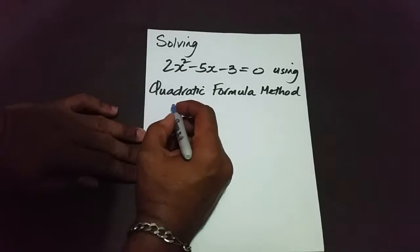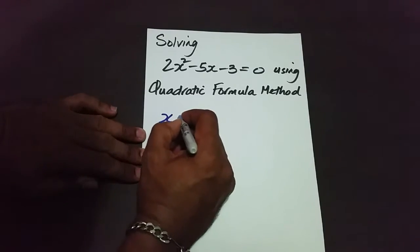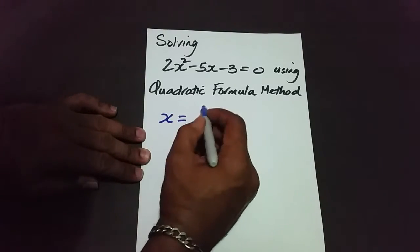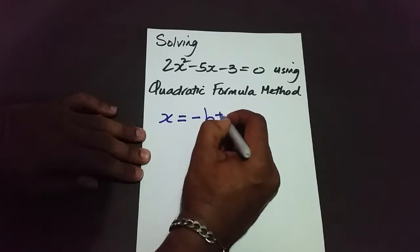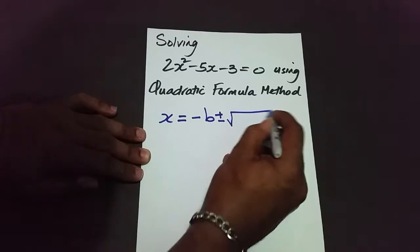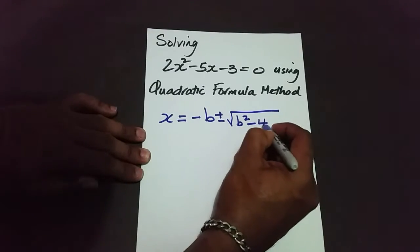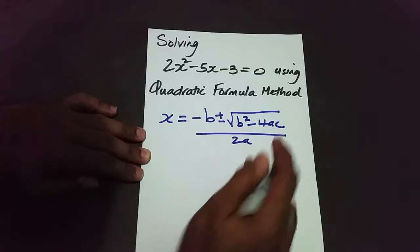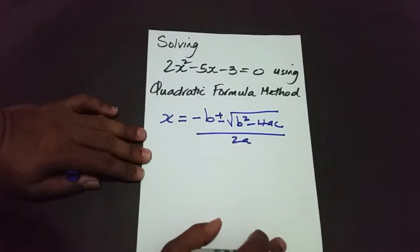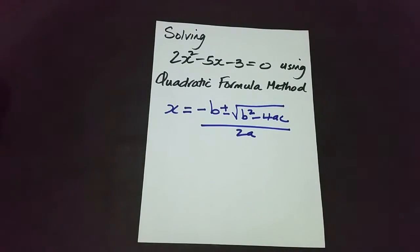The quadratic formula is: x equals negative b plus or minus the square root of b squared minus 4ac, all divided by 2a. That's the quadratic formula. So before we actually begin to use it, we have to ask ourselves a key question.